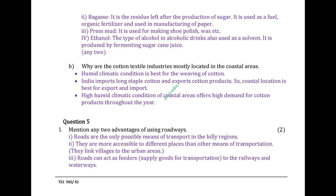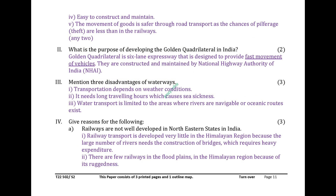Question 5. Mention any two advantages of using roadways. Roads are the only possible means of transport in hilly regions. They are more accessible to different places than other means of transportation. They link villages to urban areas. Roads can act as feeders, supplying goods for transportation to railways and waterways. Easy to construct and maintain. Movement of goods is safer through road transport as chances of pilferage and theft are less than in railways.